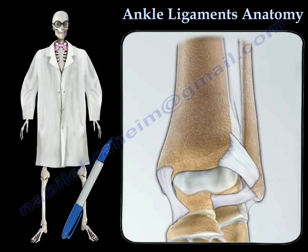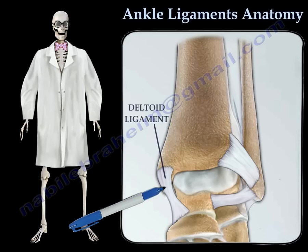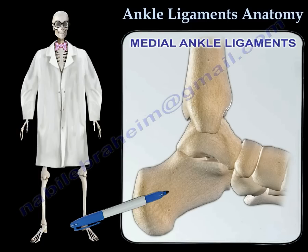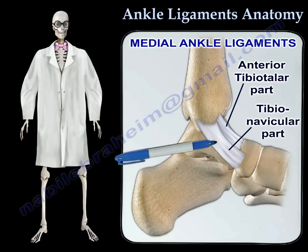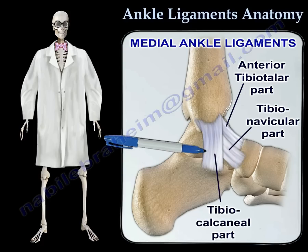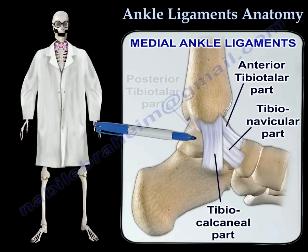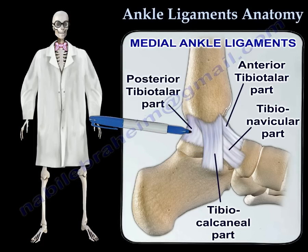Let's take a look at the ligaments from medial to lateral. The deltoid ligament is on the medial side and is composed of four parts: the anterior tibiotalar part, the tibionavicular part, the tibio-calcaneal part, and the posterior tibiotalar part.